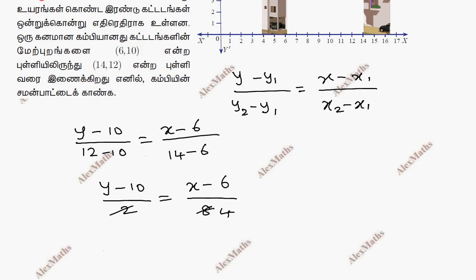If we cut, we have four times. This is a term of 4. 4y minus 40 equal to x minus 6.